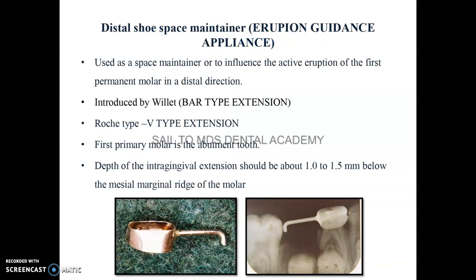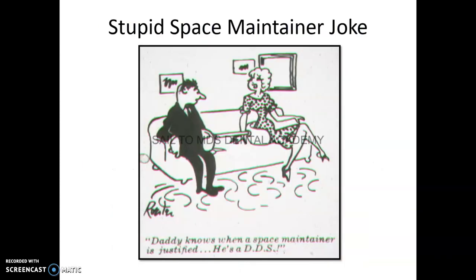The distal shoe space maintainer is also known as an eruption guidance appliance. It is used to guide the active eruption of the first permanent molar in a distal direction. It is indicated when the patient loses the second deciduous molar (tooth E) before eruption of the first permanent molar. It was introduced by Villette with a bar-type extension; Roche later gave a V-type extension. The most important MCQ: the bar should be 1 to 1.5 mm below the mesial marginal ridge of the permanent molar.